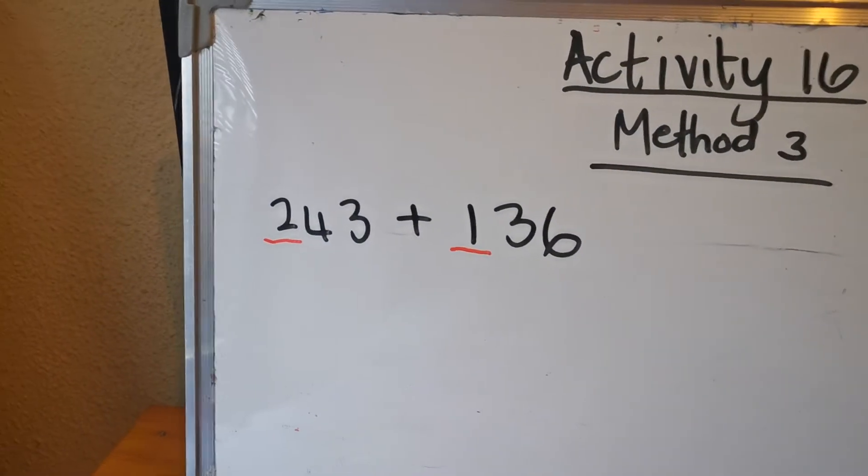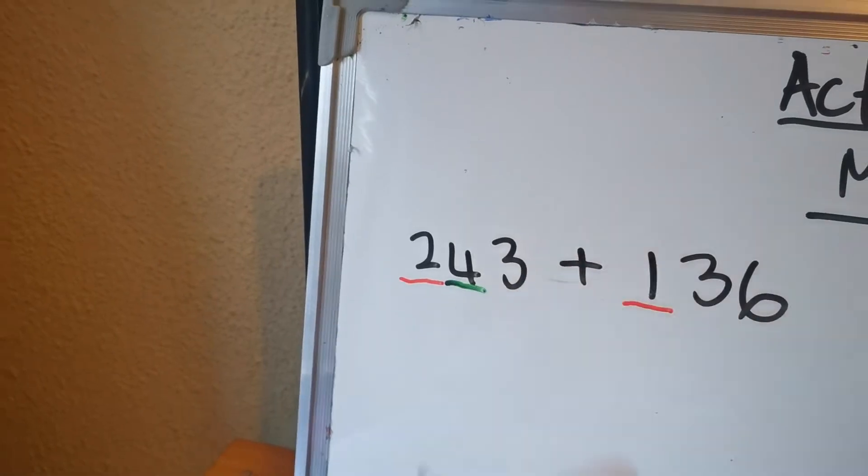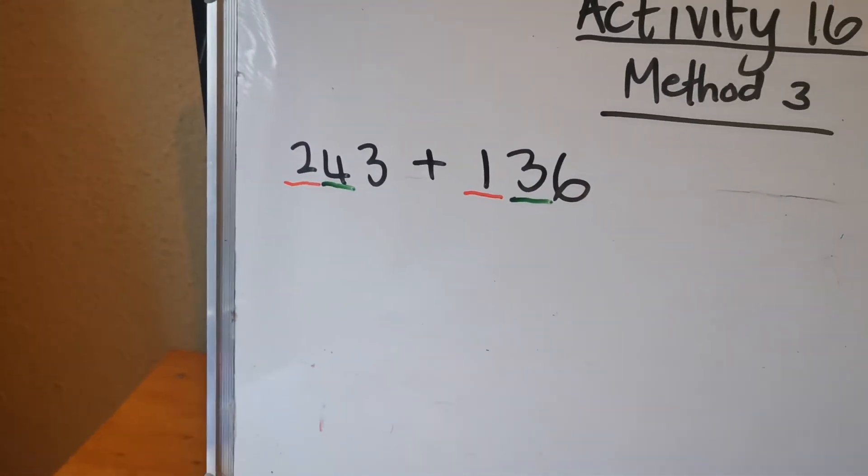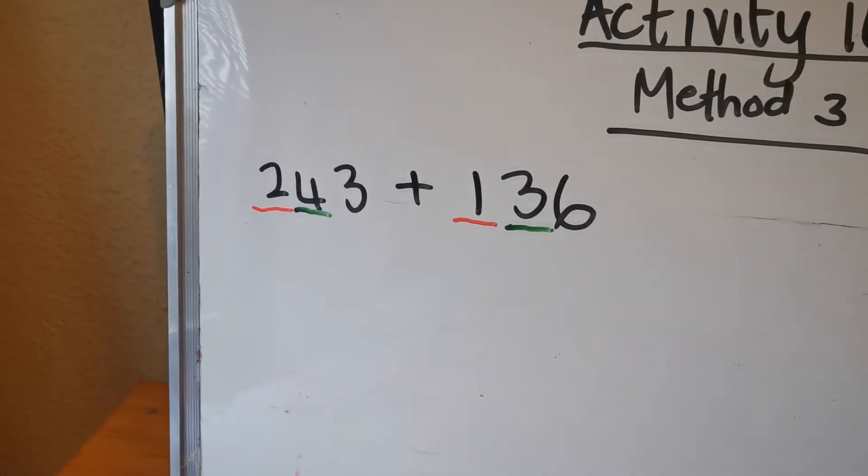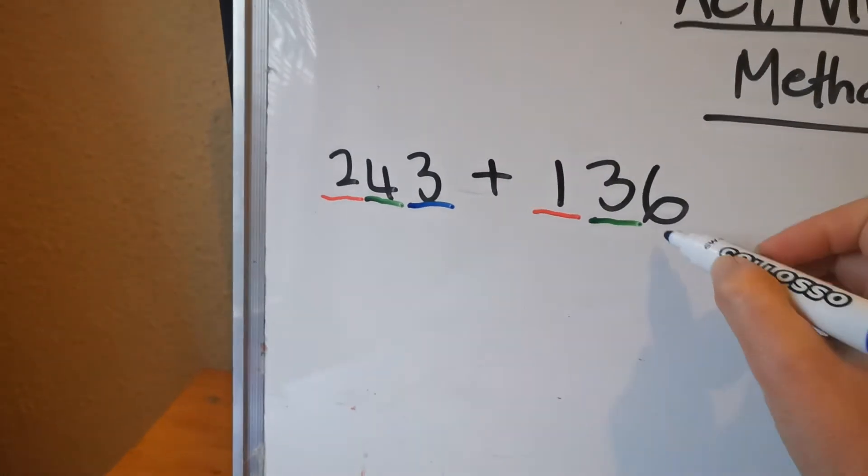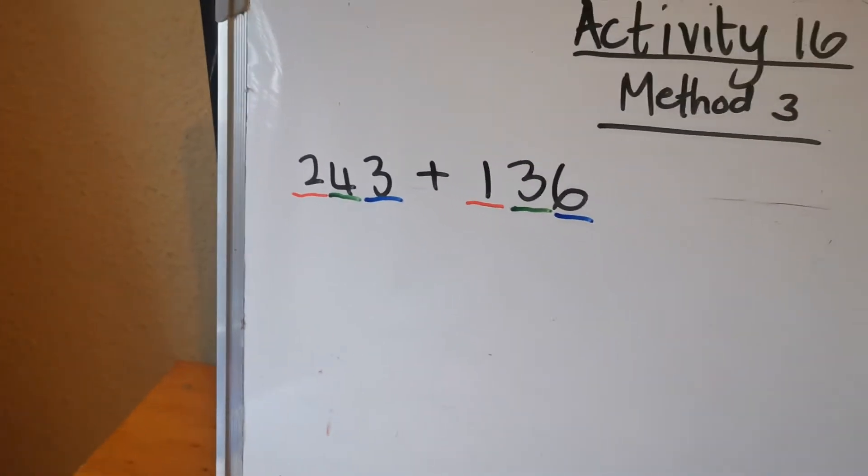Then we've got the tens. In 243 it will be the 4 for 40 and the 3 for 30 in 136. And then in 243 the units will be the 3 and in 136 the units will be the 6.